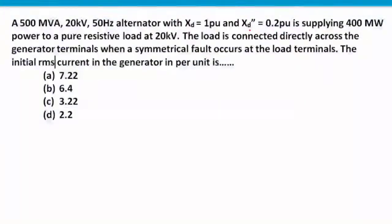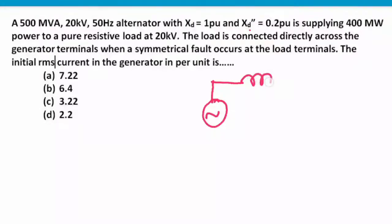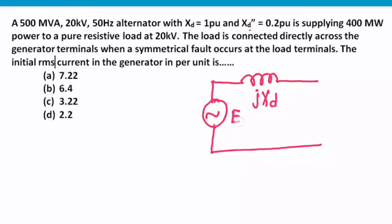We can draw the circuit here. The alternator has a reactance Xd in series, with EMF E and terminal voltage V. This circuit is supplying to a pure resistive load R, with current I flowing through it.